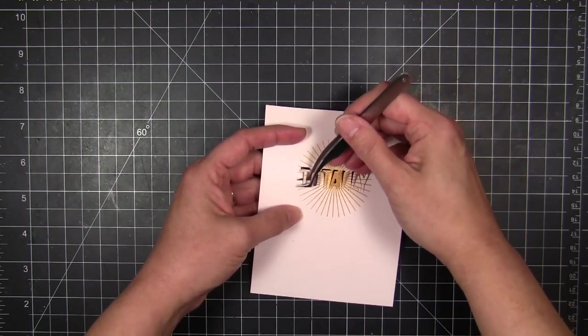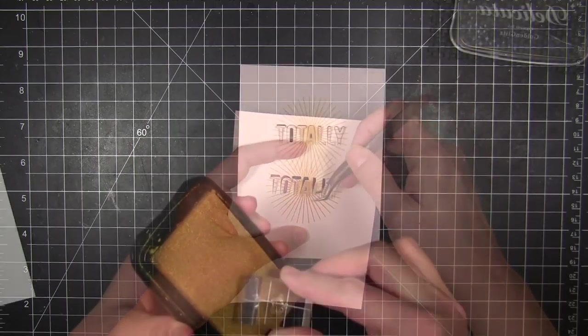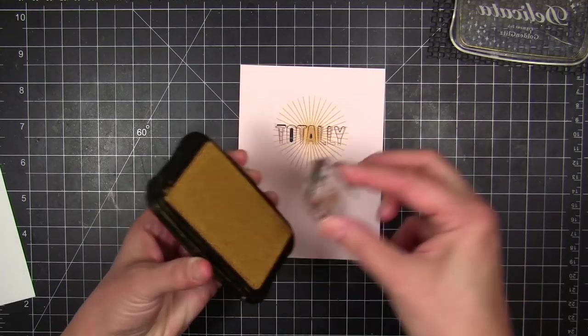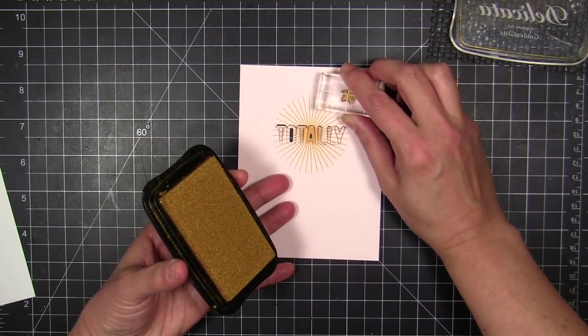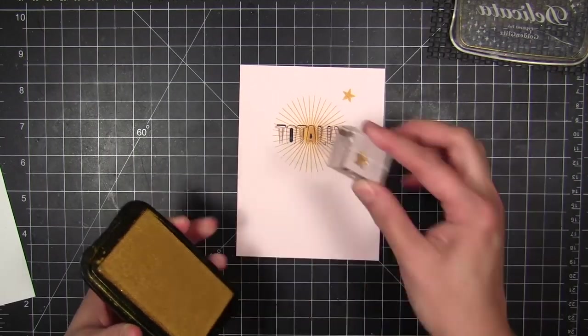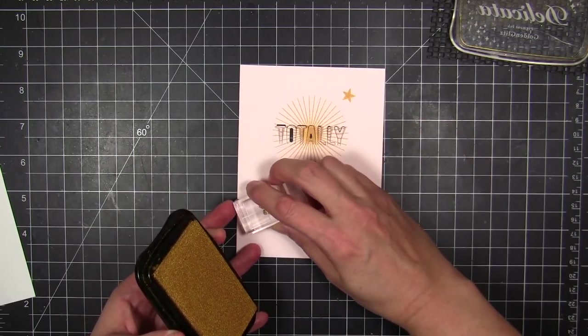And I decided as an afterthought, I wanted to add just a little bit more. So I went and grabbed the little tiny star from the same Merry and Bright stamp set and inked that up with some Delicata Golden Glitz ink as well.